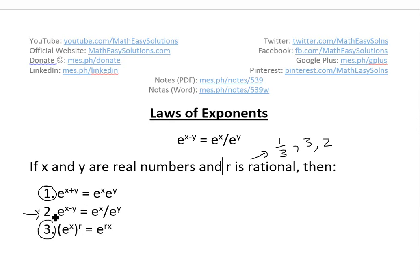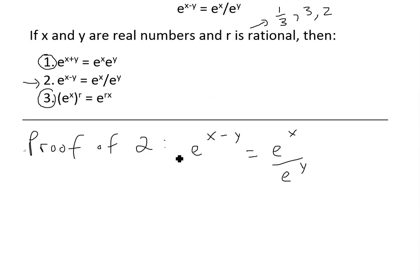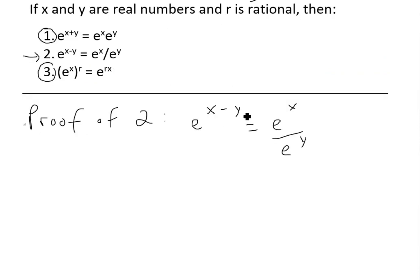So I'll go over the proof of number two right here. The proof for number two: e to the x minus y equals e to the x divided by e to the y. The proof of this is similar to what I did for the first one here.